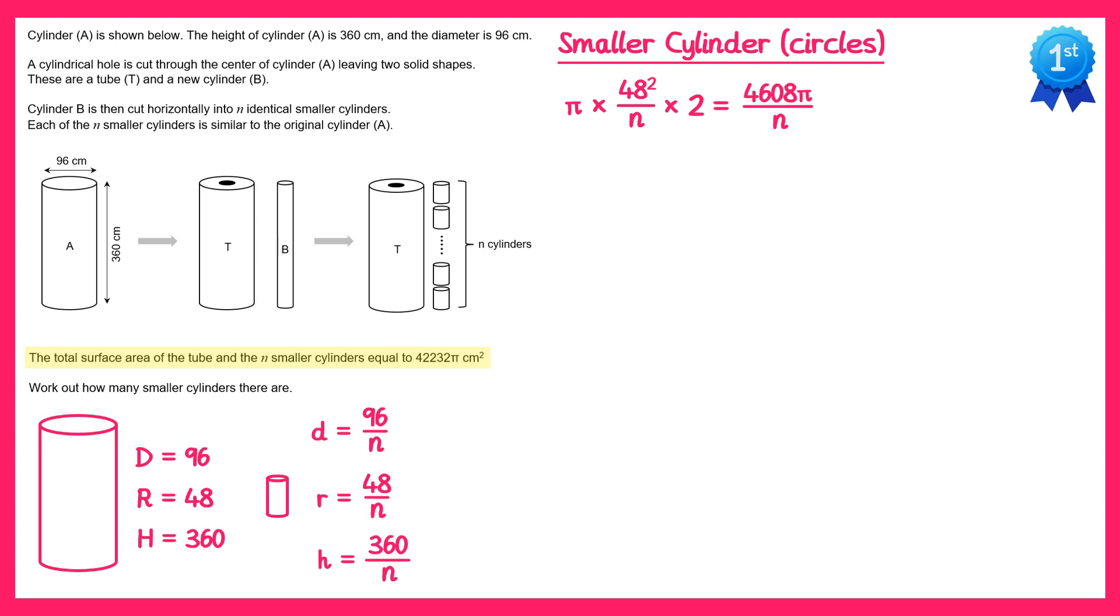Let's also stick with the small cylinders but look at the curved surfaces. The formula for the curved surface area of a cylinder is pi dh. So we're going to do pi times the diameter, which is 96 over n, times the height, which is 360 over n. Now that's for each of the smaller cylinders but there are n of those so we'll multiply this by n as well. And once again we can cancel out one of those n's, so we're left with this, which gives you 34,560 pi over n.